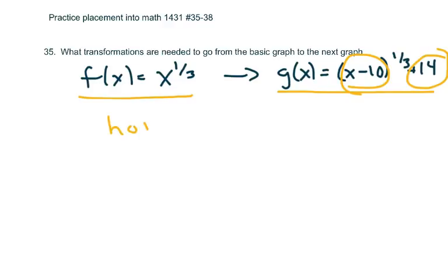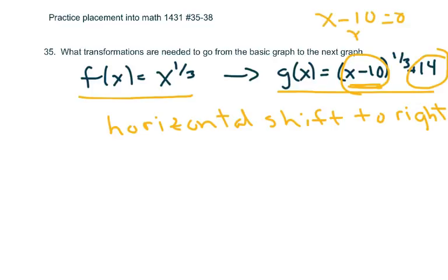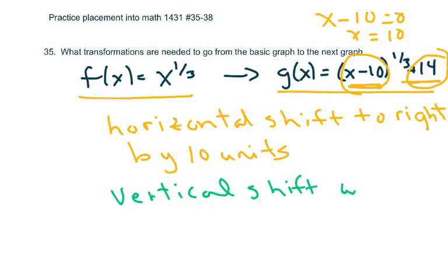It's a horizontal shift to the right. Remember, it's the distance from zero. You set that to zero, so x is 10. That's positive 10, so that's to the right by 10 units. And this just means vertical shift up by 14 units.